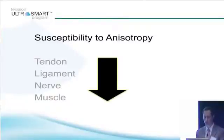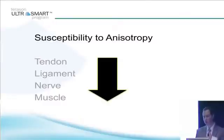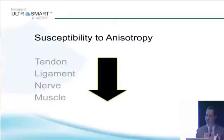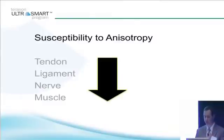Tendon is more susceptible to anisotropy. Ligament is a little less susceptible. Nerve, because it has a heterogeneous makeup with hypoechoic structures next to hyperechoic structures, is much less susceptible. There are instances in the body where nerve is immediately adjacent to tendon, where if you toggle the transducer about five degrees, you can differentiate whether there's a nerve or a tendon there, because the tendon will become hypoechoic and the nerve will remain as it is. Muscle is not particularly susceptible.